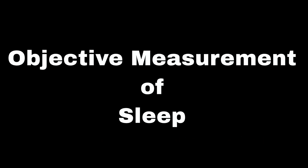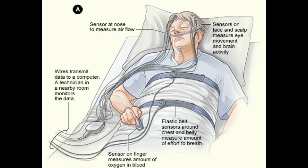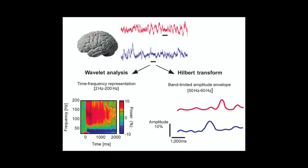Objective measurement of sleep in the critically ill includes polysomnography (PSG), the gold standard, but limited in the ICU due to logistical, technical, and financial barriers, with poor tolerance in up to 25% of ICU patients and inaccuracy for atypical sleep patterns. EEG spectral analysis simplifies sleep analysis using fewer EEG leads. The bispectral index (BIS) is not reliable for differentiating sleep stages. The odds ratio product index and ICU depth of sleep index show promise but require further validation.